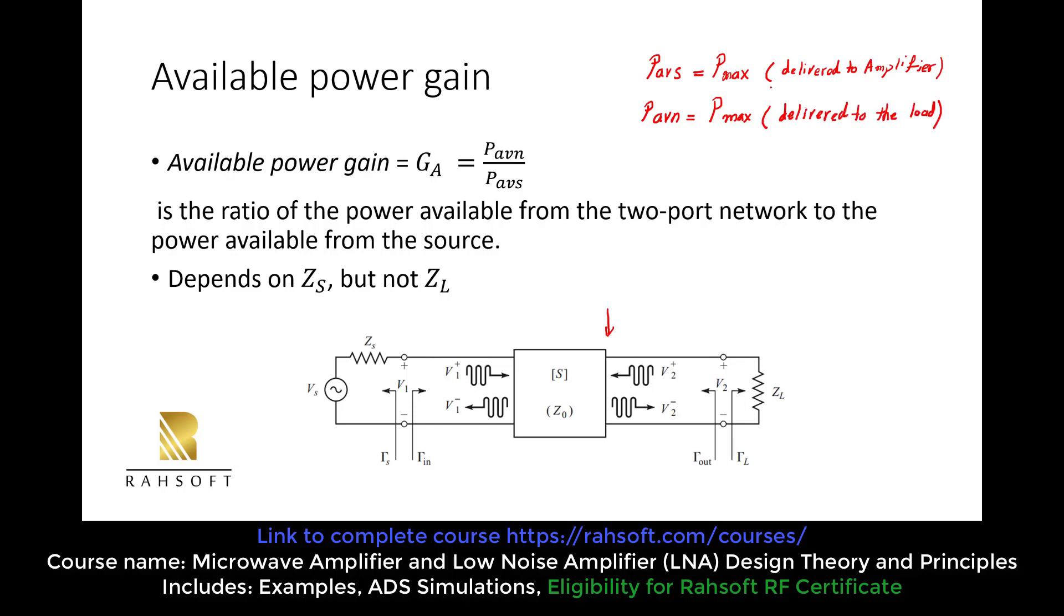So these are two very important definitions. We are going to talk about this more. So we say the available power gain is the ratio of power available from the two-port network to the power available from the source.